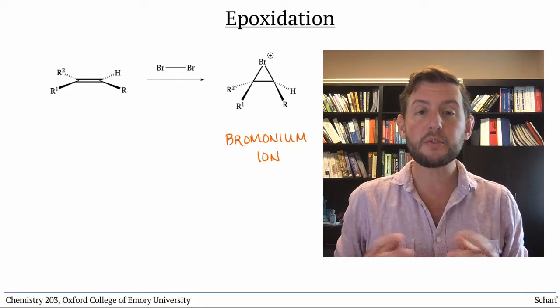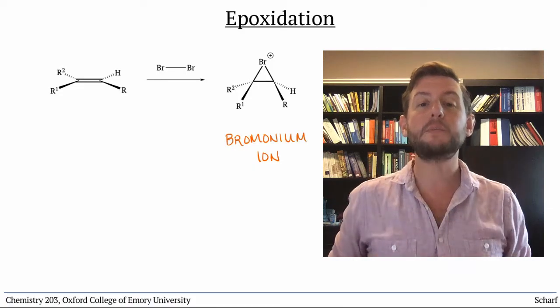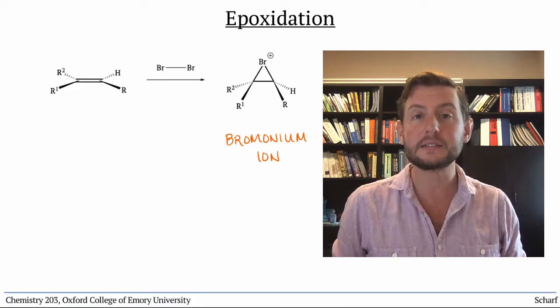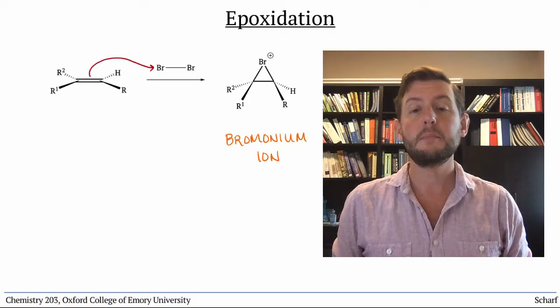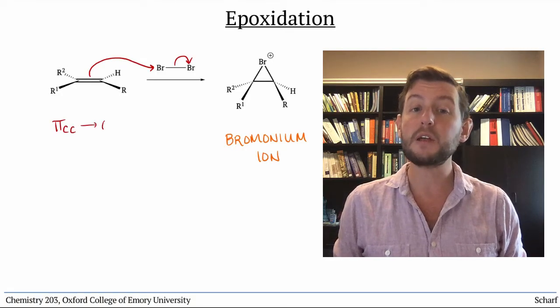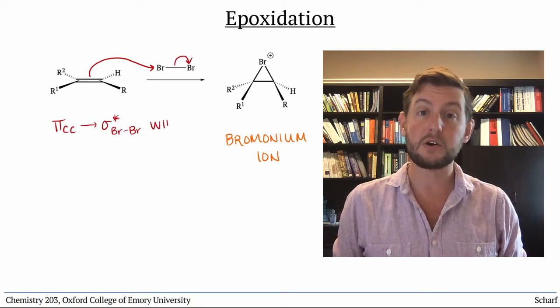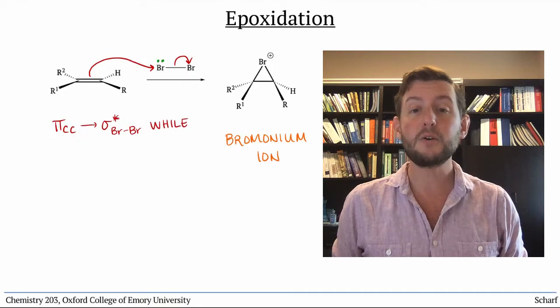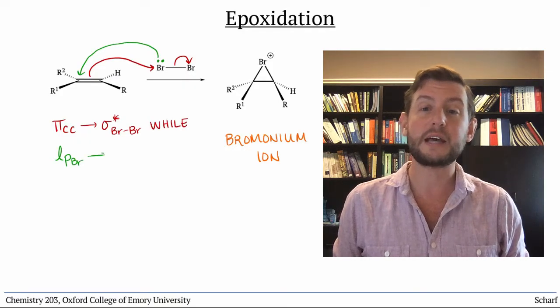The formation of the three-membered ring happened by two simultaneous MO interactions: pi-CC donating into the very good acceptor orbital sigma-star-BrBr, and a lone pair on bromine also attacking pi-star-CC.